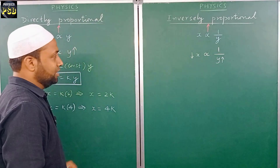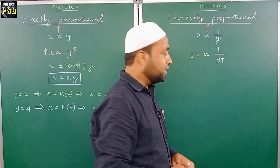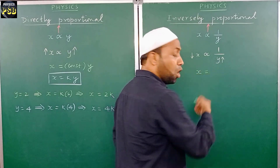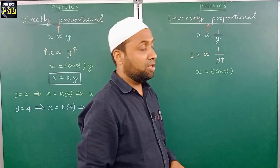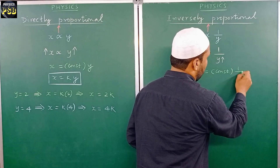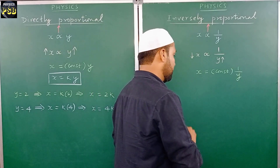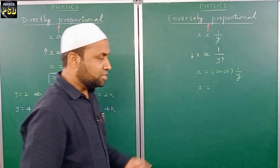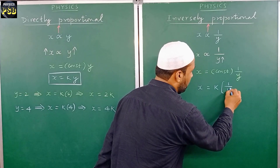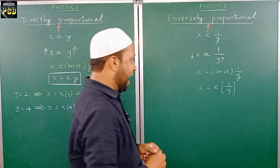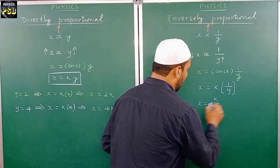To make it easier to understand, I convert this expression into an equation by following the same method used earlier. I remove the proportionality symbol by including a constant along with an equal-to sign. This constant is the proportionality constant, and for convenience I replace it with the symbol k. So this can be written as x equals k multiplied by 1 upon y, which gives us x equals k upon y. I box this final equation.